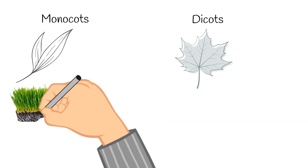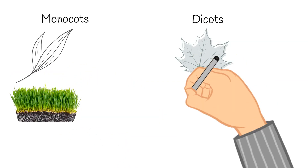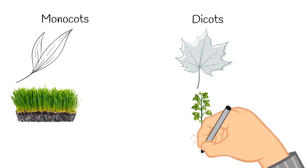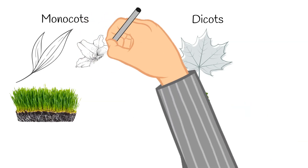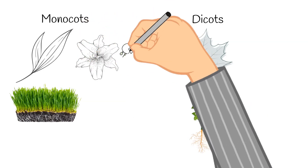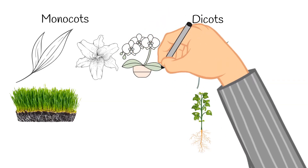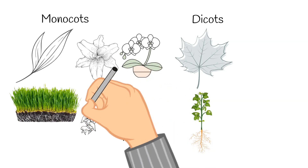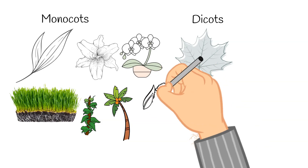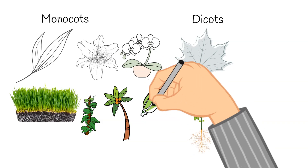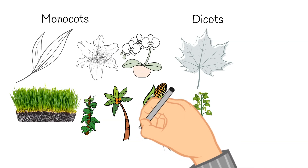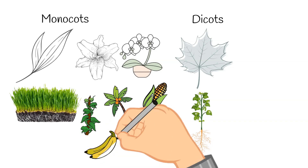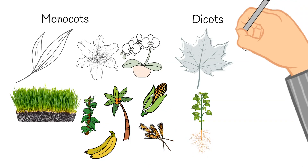Another difference arises when looking at the roots. Monocot roots have no main root and are just dispersed, but dicot roots have a main root, also called a tap root, with other roots coming off of it. Some examples of monocots include lilies, orchids, and grasses, as well as large palm trees and climbing vines. Monocots are very important because they also include things like corn, wheat, pineapples, and bananas — important staples of our food system.